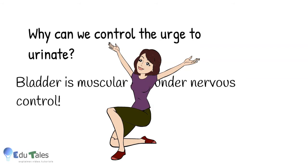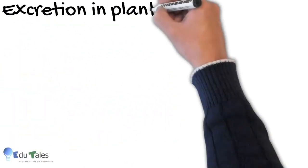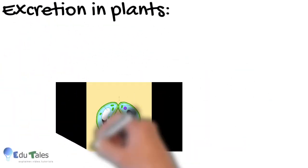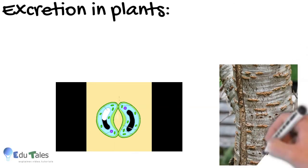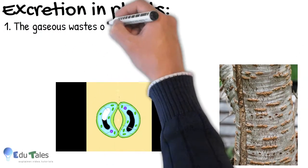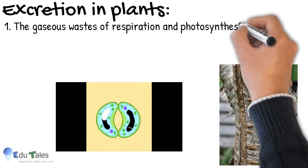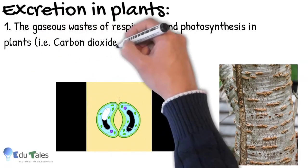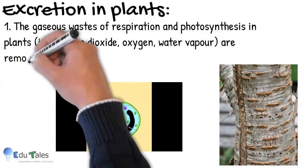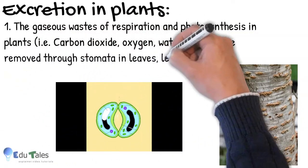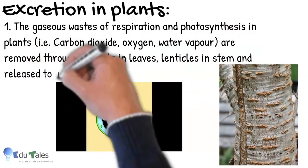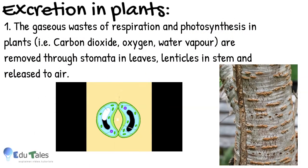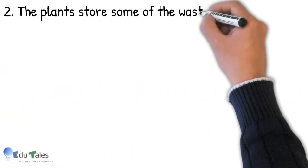Let us see the last topic for this chapter: excretion in plants. Mainly four types of excretion are observed in plants. First, the gaseous wastes of respiration and photosynthesis in plants, that is carbon dioxide, oxygen, and water vapor, are removed through stomata in leaves, lenticels in stem, and released to air.